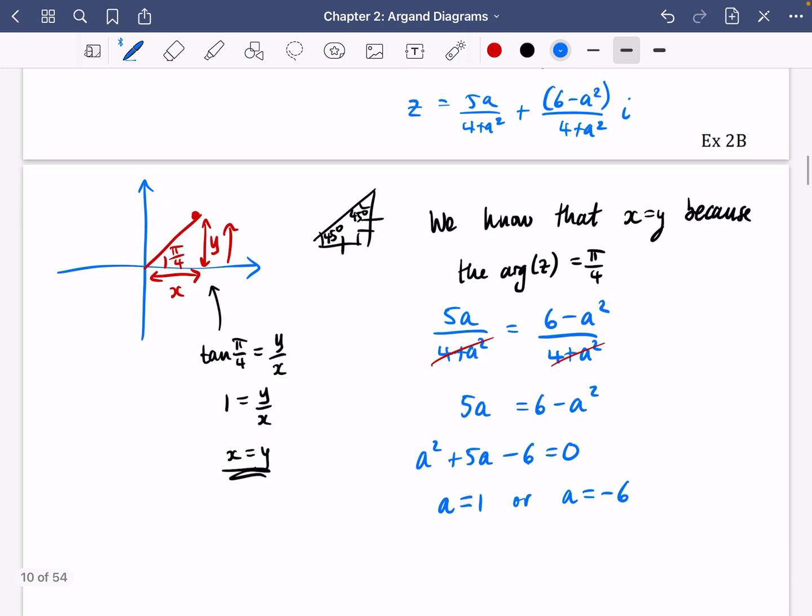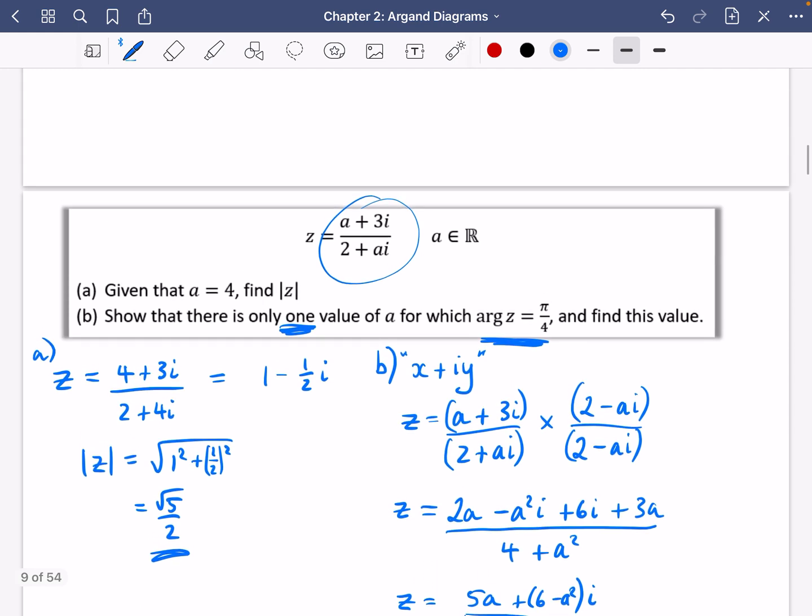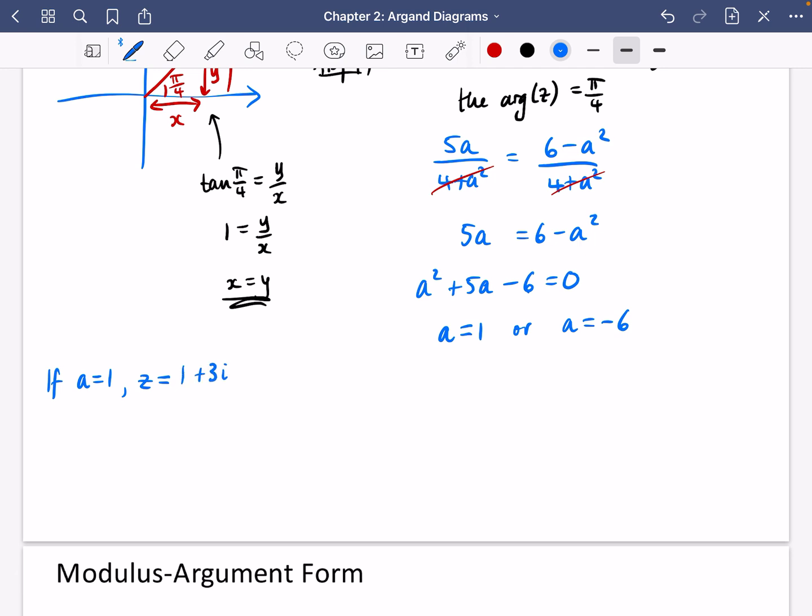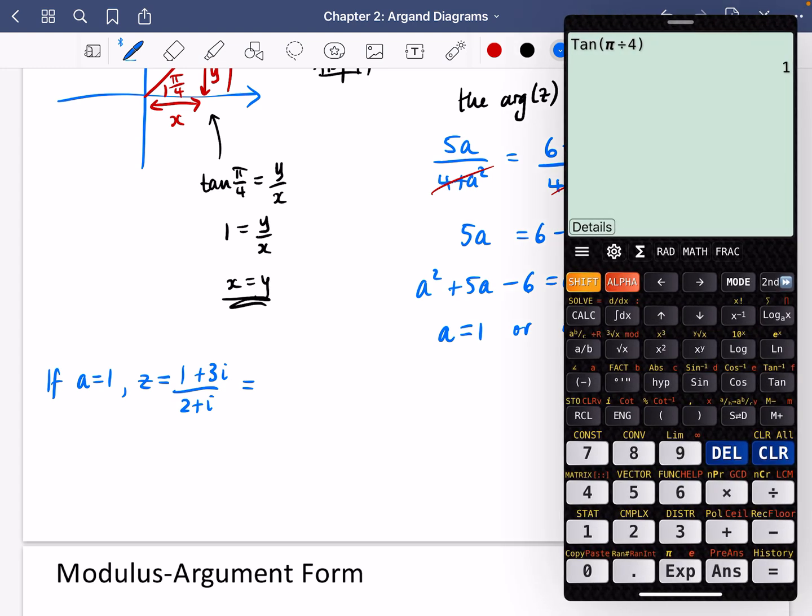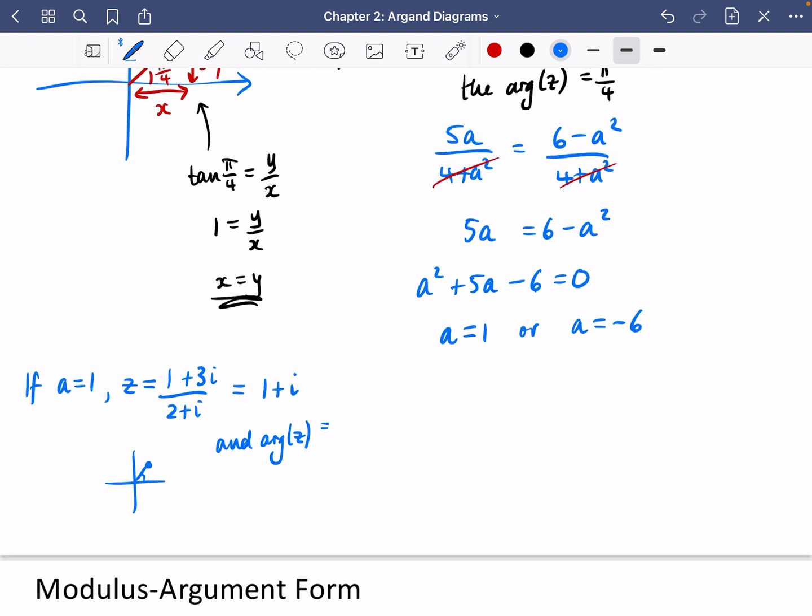So I think what we probably need to do is test both of these values and just see what happens. So let's say if a equals 1, then z would be equal to 1 plus 3i over 2 plus i. I'm just going to put that on our calculator. So that's 1 plus 3i over 2 plus i, which is equal to 1 plus i. Now just a quick sketch of that, and you will see that 1 plus i would be here, and it does indeed have an argument of π over 4. So if a equals 1, z equals this, and the argument of z does equal π over 4. So it looks like our answer is going to be a equals 1.